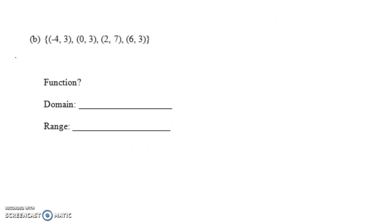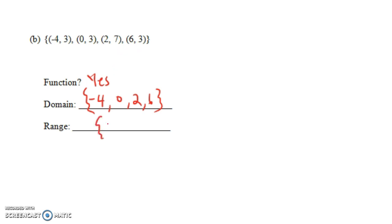Now the last example for this video. We have a collection of four ordered pairs: (-4, 3), (0, 3), (2, 7), and (6, 3). Is this a function? Yes, it is a function. Each thing in the domain — the minus 4, the 0, the 2, and the 6 — corresponds to exactly one thing in the range. For instance, minus 4 only corresponds to 3; there's no other ordered pair with minus 4 comma something else. And the range would be {3, 7}.